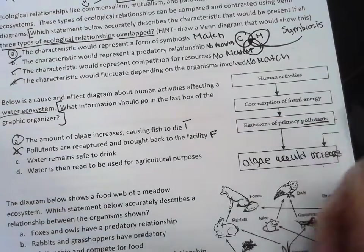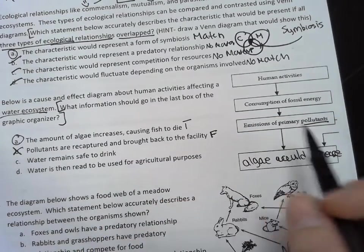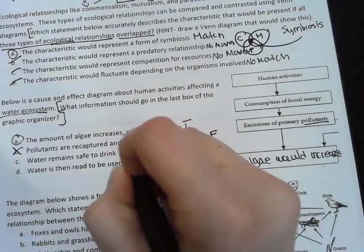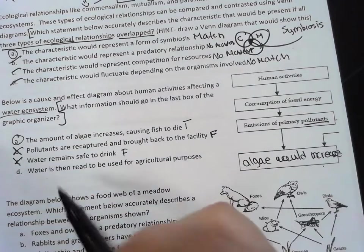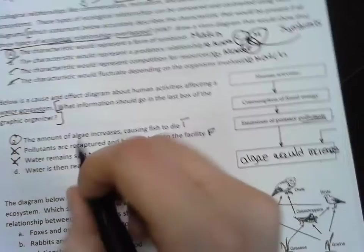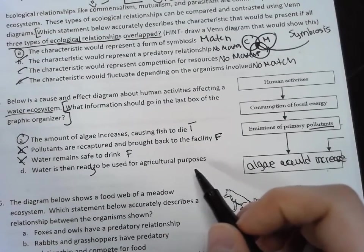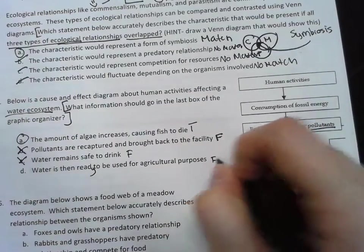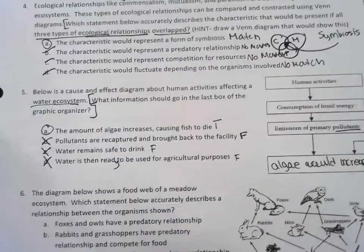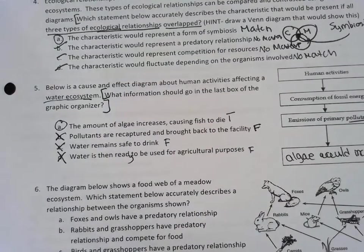That's really unlikely for what they would do. Water remains safe to drink - well if there's pollutants in your water, then no, that would not be safe, don't do that. Water's then ready to be used for agricultural purposes - why would I say no? Because if it's already polluted, you wouldn't want to put that on crops because then you would then eat that too.